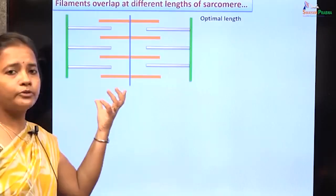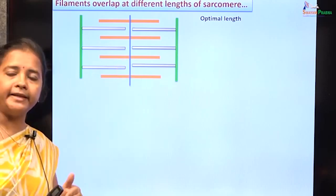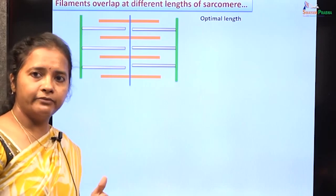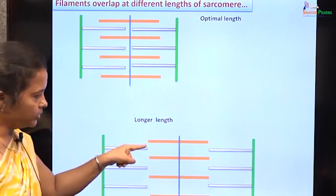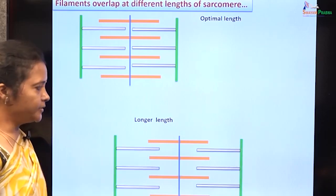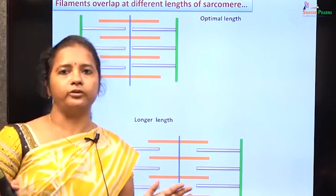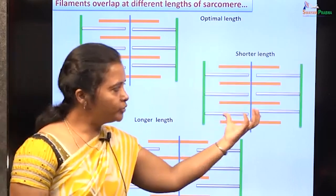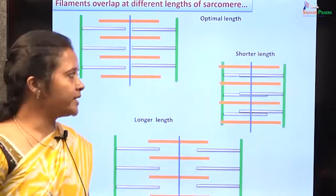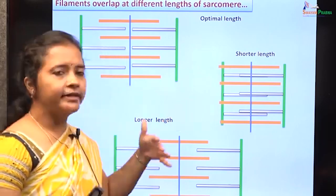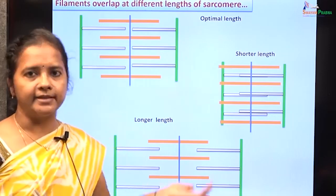At optimal length, when filament overlap is ideal, there is maximum actin-myosin interaction and maximum sliding of actin filaments over myosin, producing maximum tension. When actin filaments are very far apart, there is no active cross-bridge interaction and tension is minimal. When the sarcomere is too short, actin filaments have already moved toward the myosin filaments, reducing actin-myosin interaction and leading to reduced tension upon stimulation.